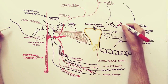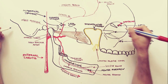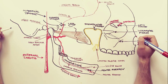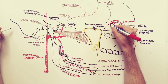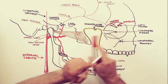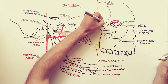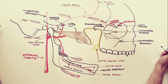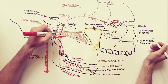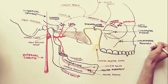Another important branch from the middle meningeal artery is the anastomosing branch with the lacrimal artery. The lacrimal artery arises from the ophthalmic artery, which enters the orbit through the optic foramen. It gives off the lacrimal artery, and from this artery there is a recurrent branch that enters the skull through the superior orbital fissure. This recurrent branch of the lacrimal artery anastomoses with the anastomosing branch of the middle meningeal artery, realizing the anastomosis between the middle meningeal and the ophthalmic artery.